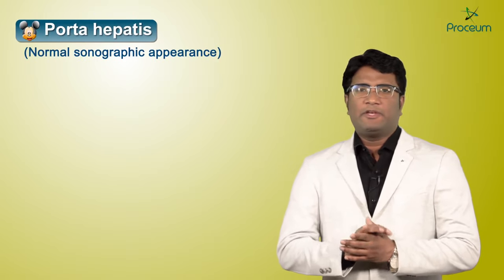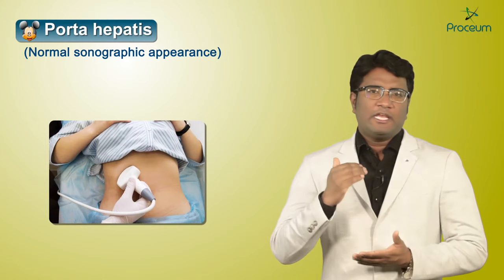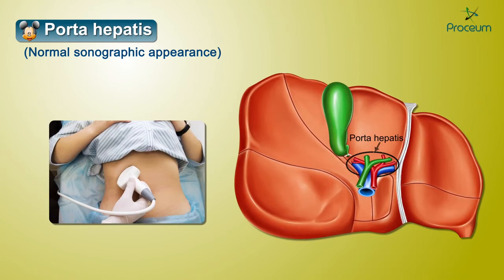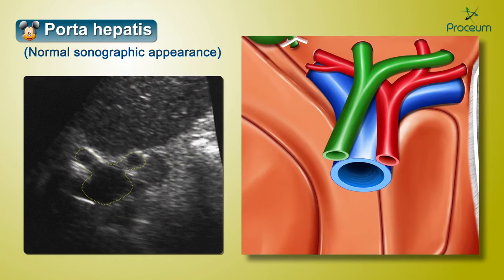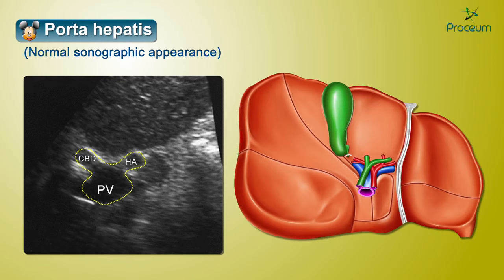Another important place where we encounter this Mickey Mouse sign is on ultrasound of the liver and biliary tree. At the inferior aspect of the liver at the porta hepatis, where we see the portal triad — the portal vein and hepatic artery entering the liver and the common bile duct exiting the liver — we see the Mickey Mouse appearance. The portal vein forms the face of the Mickey Mouse, the common bile duct forms the right ear, and the hepatic artery forms the left ear.